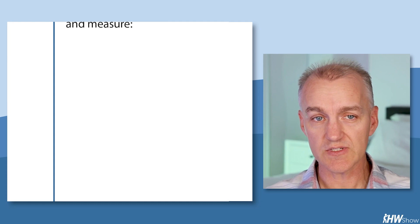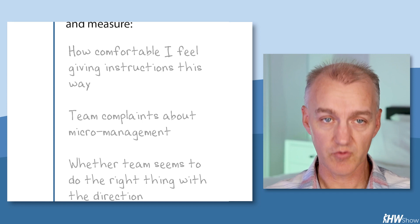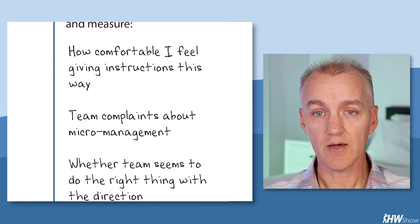Good experiments need to have some type of measurement, how we'll know they worked or not. Otherwise, we tend to just talk ourselves into believing the experiment worked. And this leader decided to measure how comfortable he felt when giving direction this way, whether the team complained about being micromanaged, and whether the team seemed to do the right thing based on this style of giving directions. We'll post a PDF of this immunity to change map in the show notes, along with a blank one that you can use.